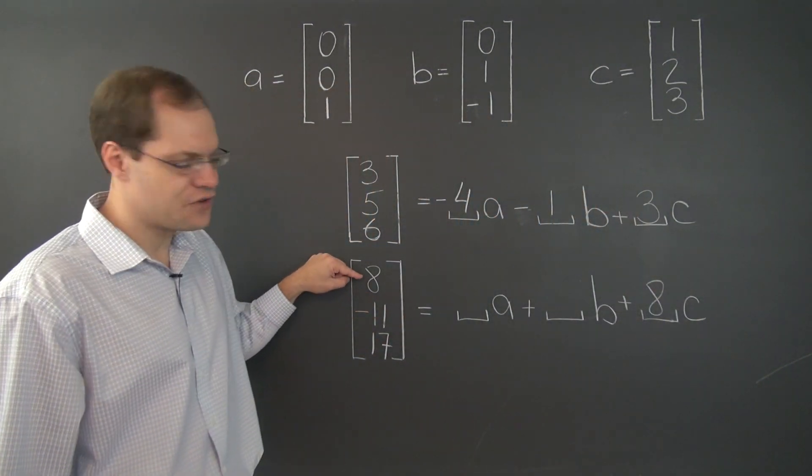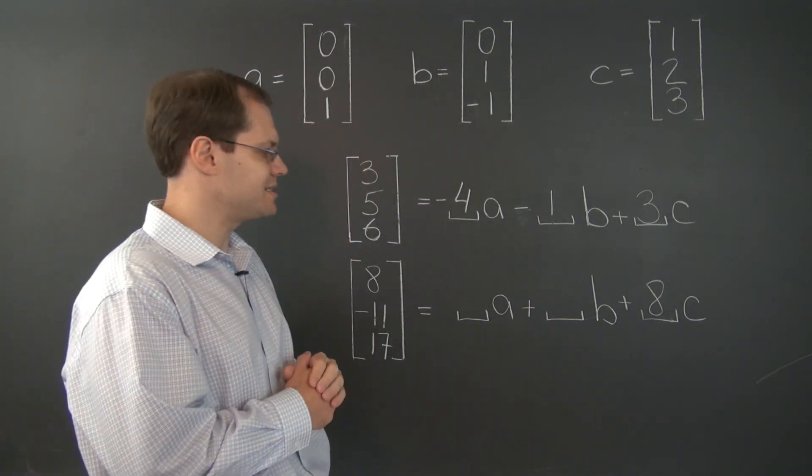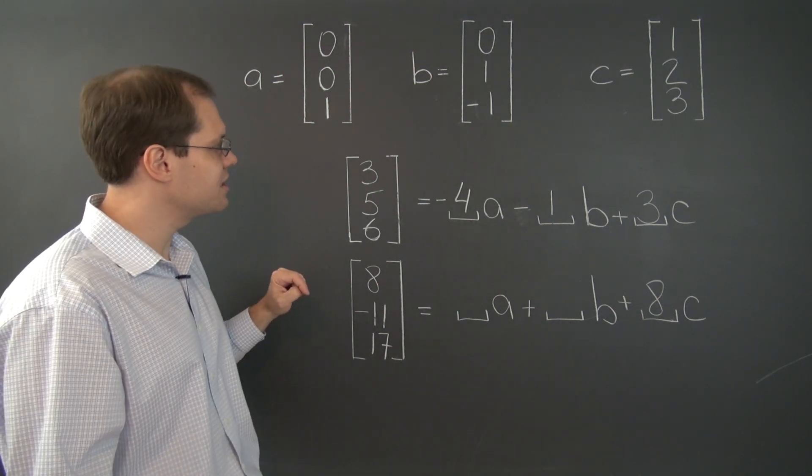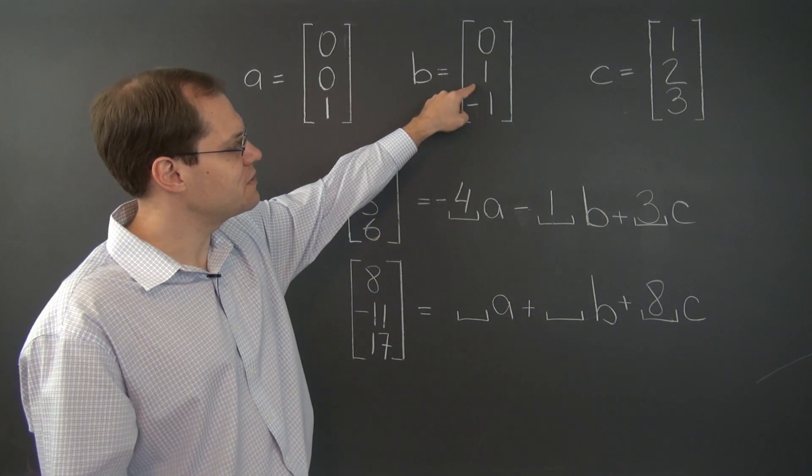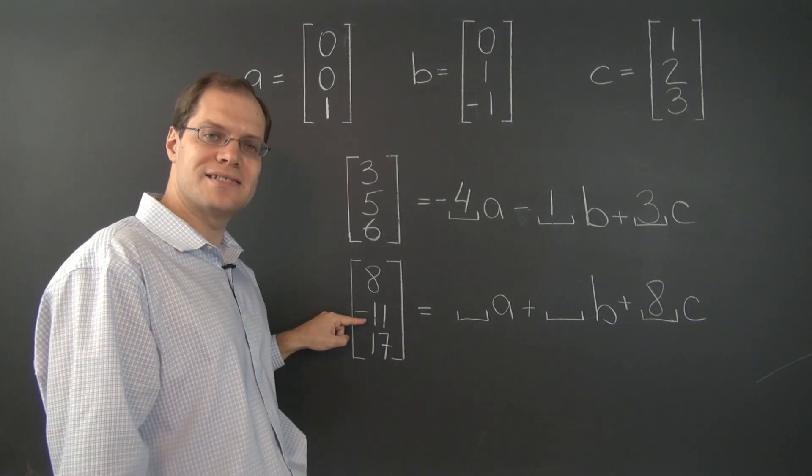That guarantees that the first entry is eight, because these two vectors cannot mess it up. And now that we have established this entry right here, we have to get minus eleven right with the help of the vector B.